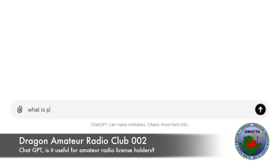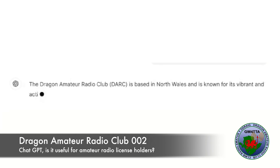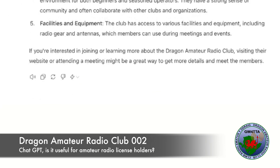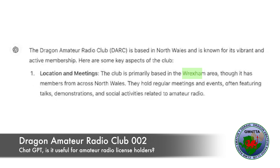Of course, you could always ask it what is probably the best amateur radio club in North Wales — and of course it's bound to answer the Dragon Amateur Radio Club, giving you some information about it. You can't always believe what ChatGPT says, it's worth checking. Because in this case it says the Dragon Amateur Radio Club is based in Wrexham, which of course it is not — it's based on Anglesey.